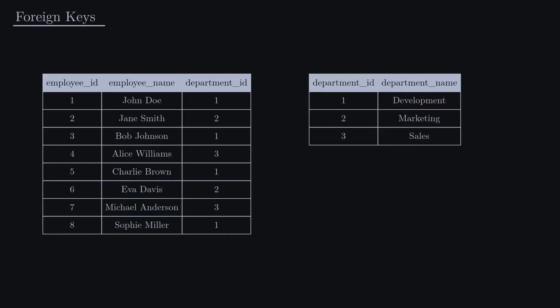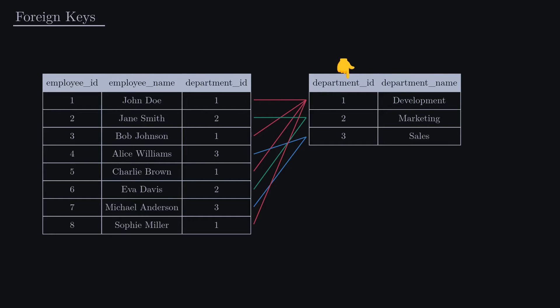For example, in the employees table, we may need a relation between each employee and their respective departments. Therefore, we need a column that contains the primary keys of the employee's department. In the employees table, we have the department ID as a foreign key, which links to the primary key of the departments table.